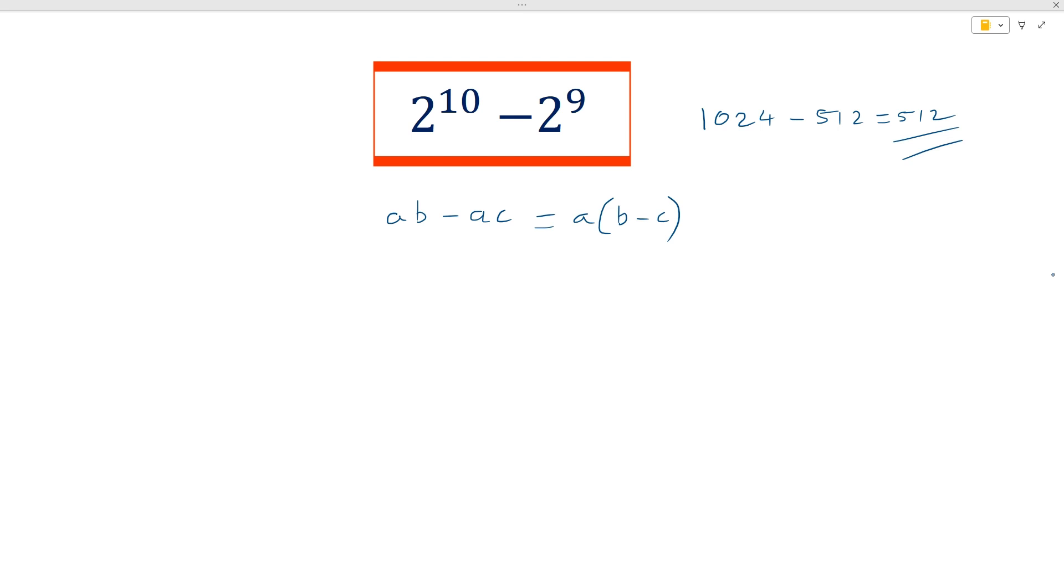So what we can do is change 2 to the power 10, which means 2 times 2 times 2 times 2, 10 times. We can change that into 2 to the power 9 times 2, and then we can say that this is multiplied by 2 and subtract 2 to the power 9 from it.